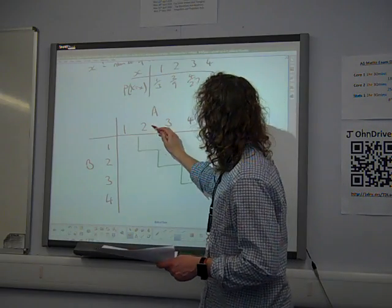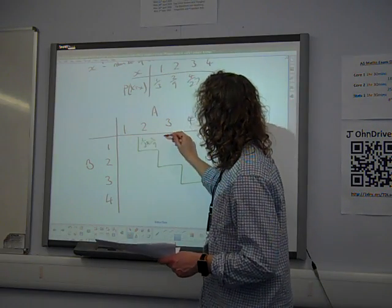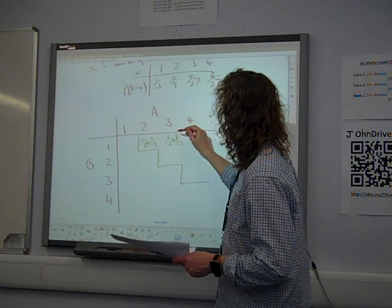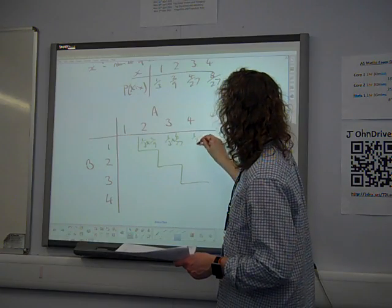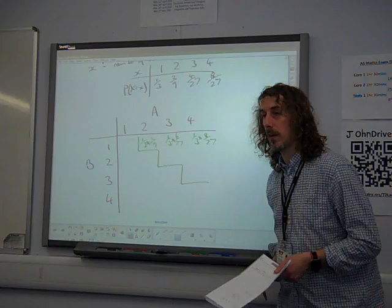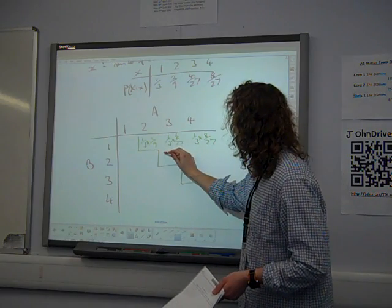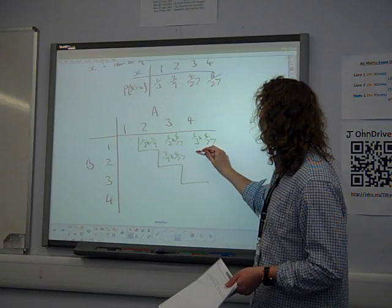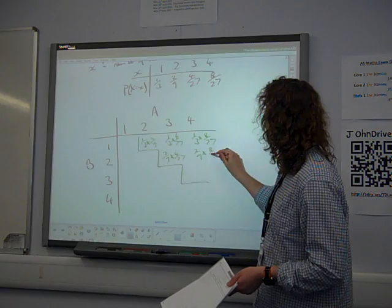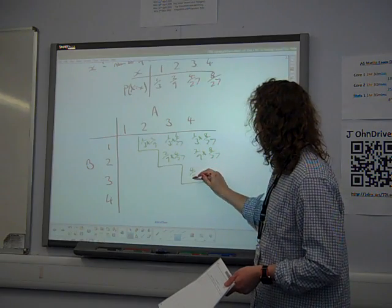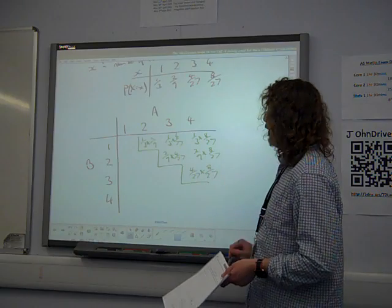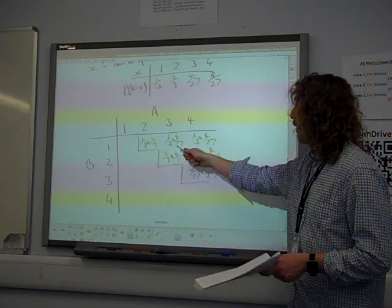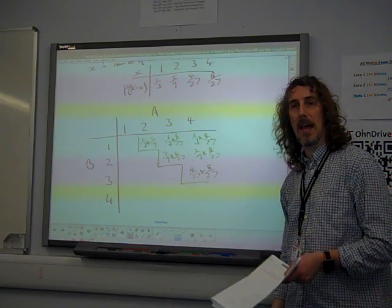So what are the probabilities in there? Well, that is one and two, so that's one-third times two-ninths. That one is one and three, so one-third times four-twenty-sevenths. That's one and four, so one-third times eight-twenty-sevenths. Here is two and three, so that's two-ninths times four-twenty-sevenths. Here is two and four, two-ninths times eight-twenty-sevenths. And here we have three and four. There we go.